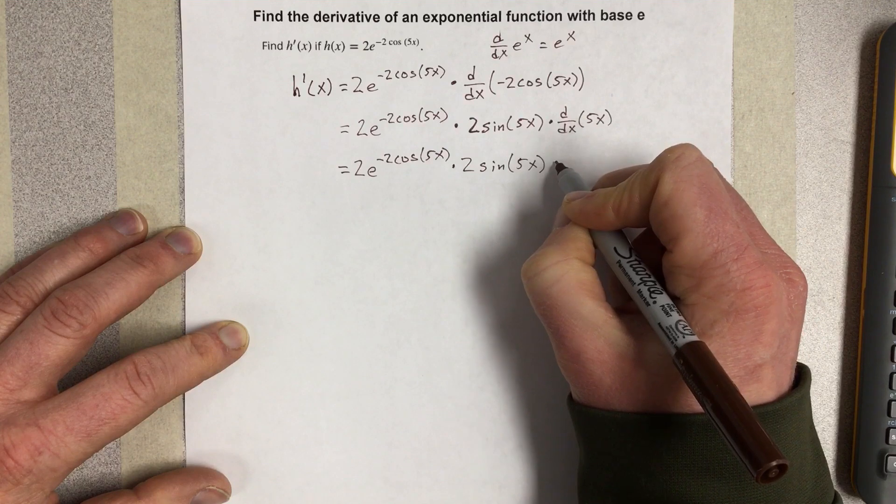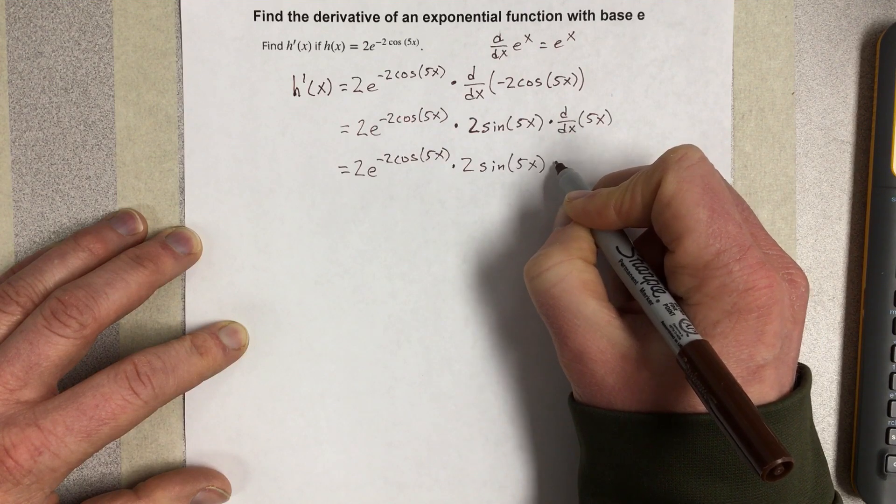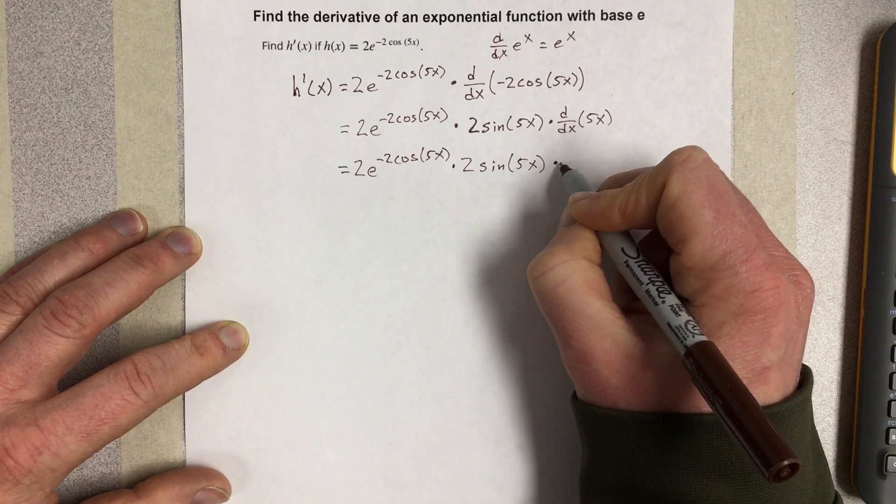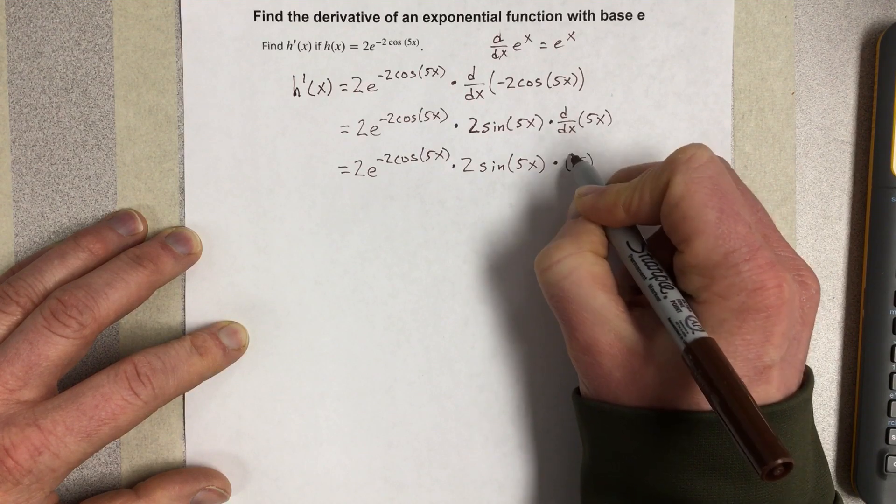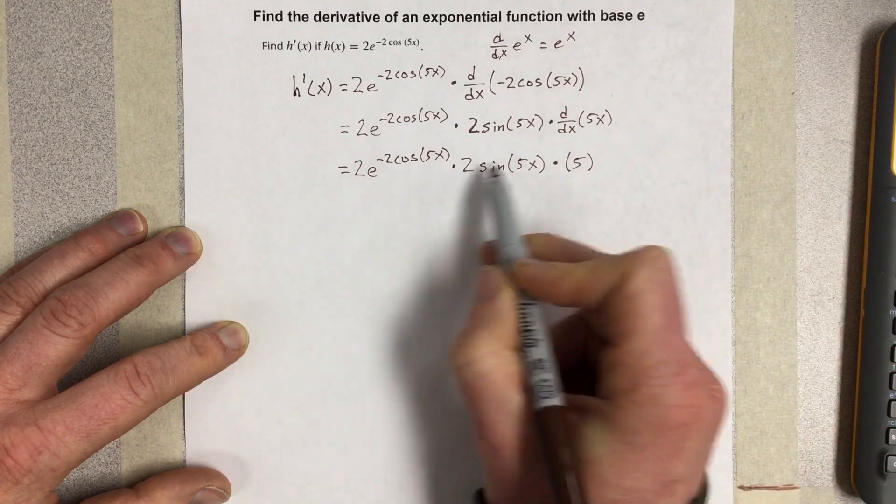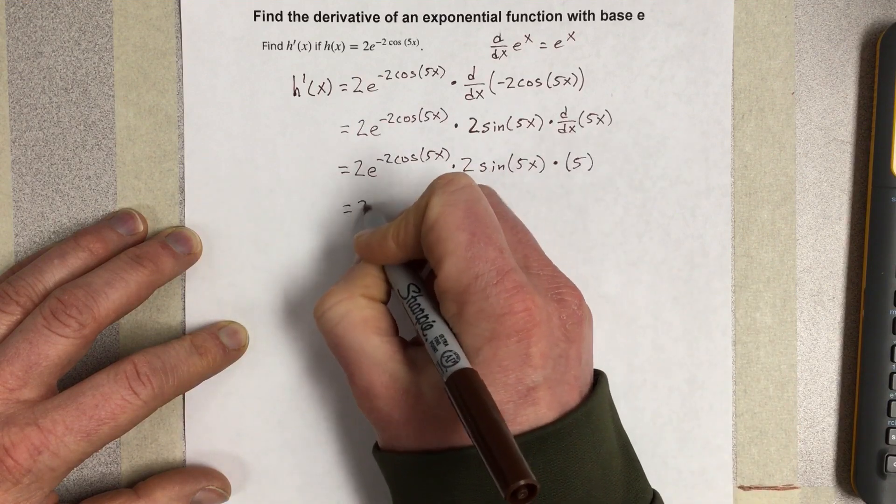And then the derivative of this would be times—so we're going to write, I don't really like writing it out here, but we'll just put it out there—times 5. So if I take 2 times 2 times 5, I get 20. So I'm going to have 20.